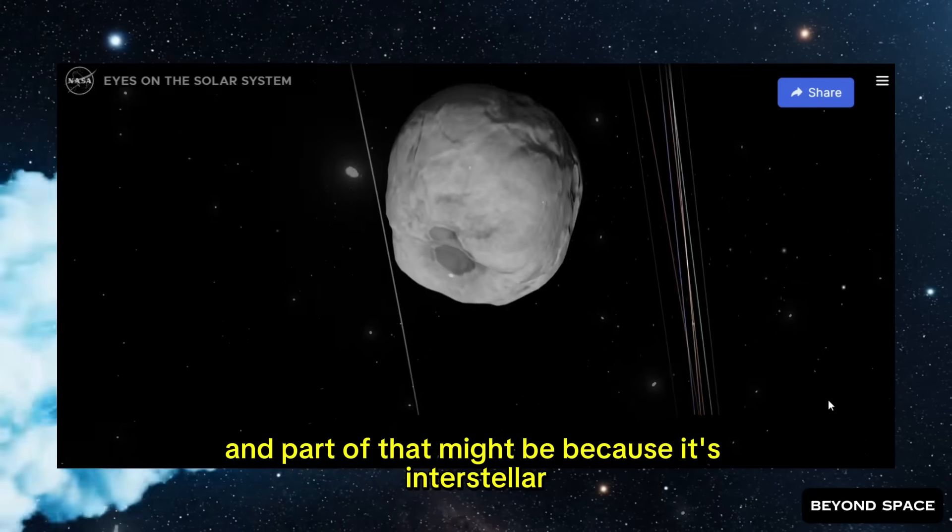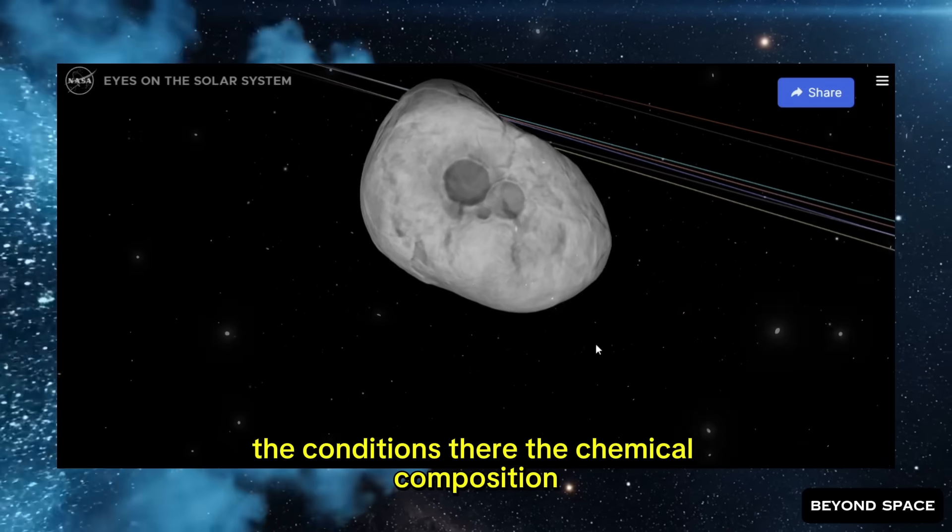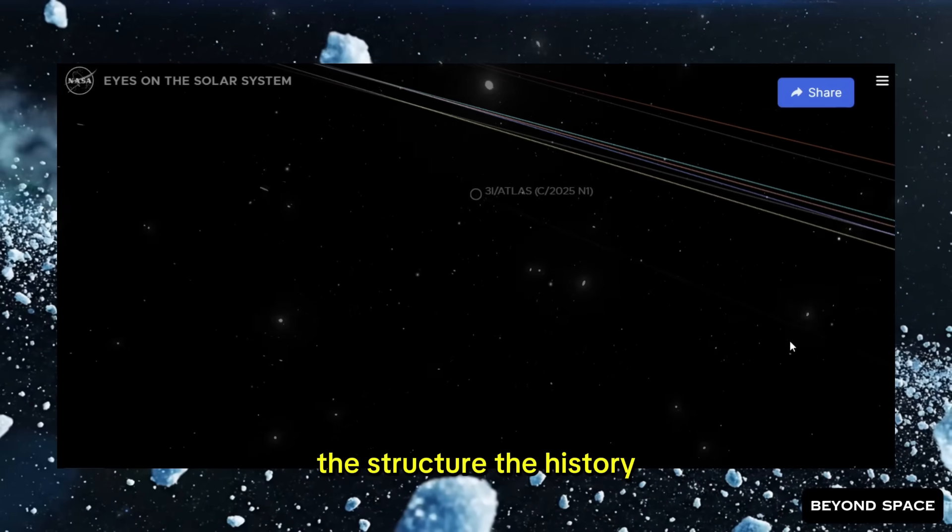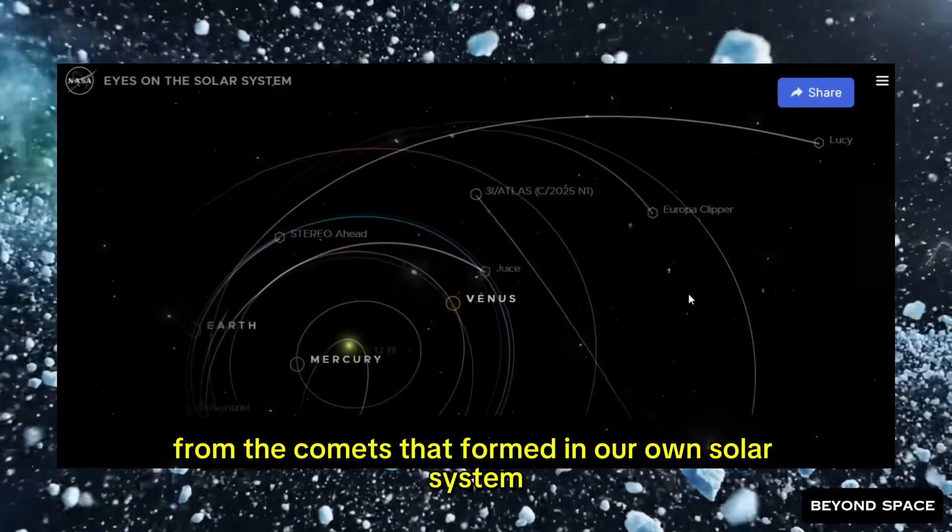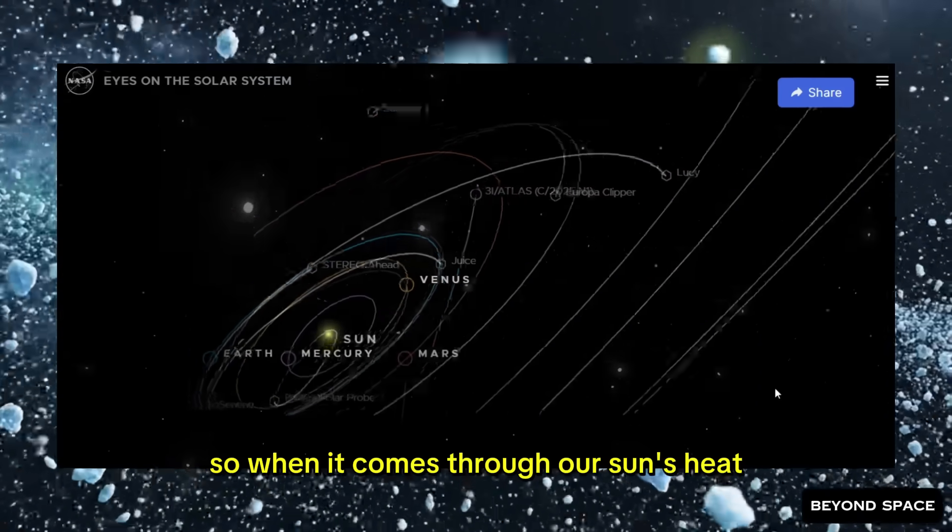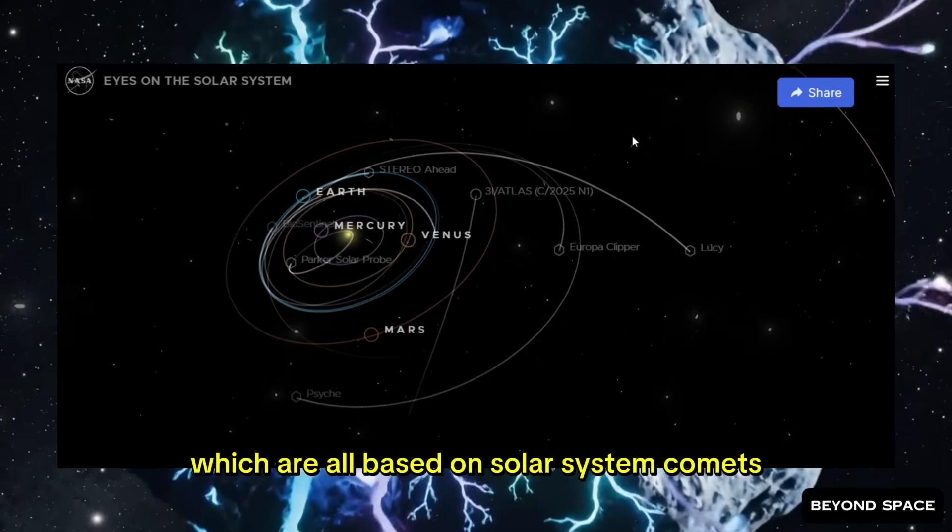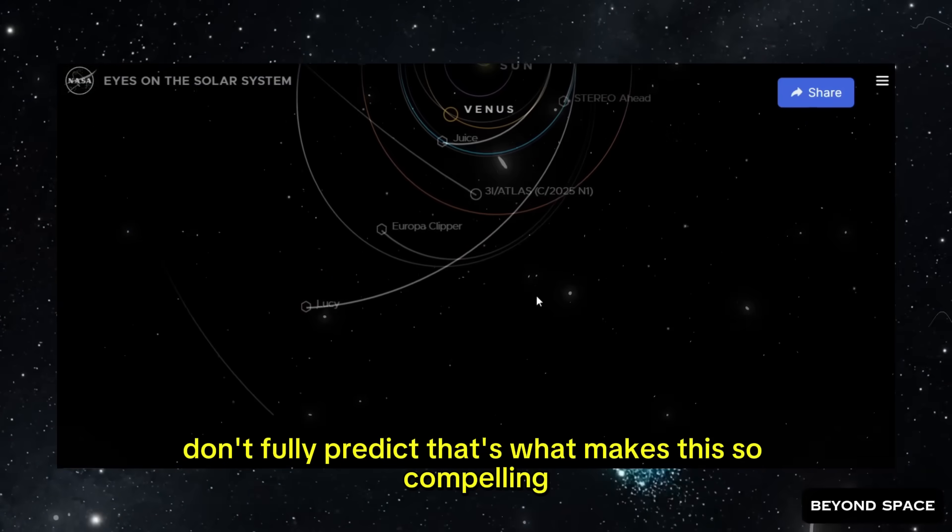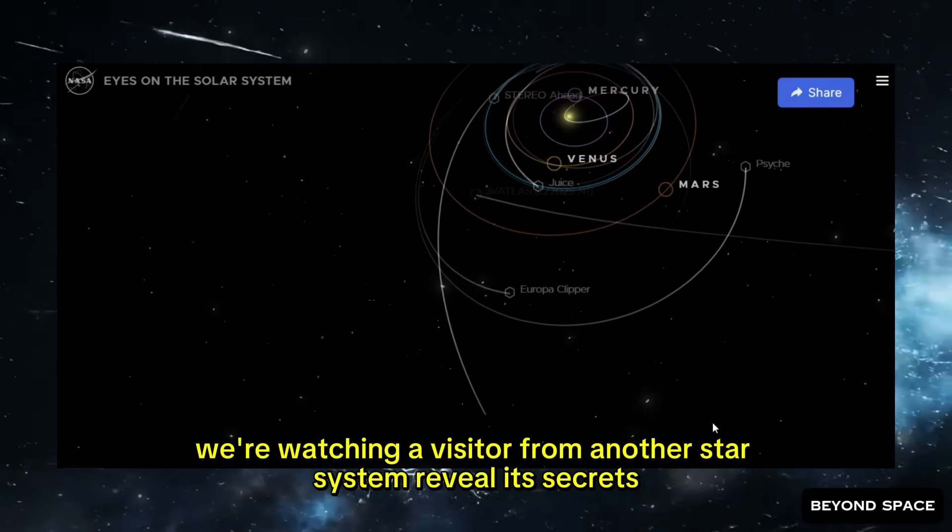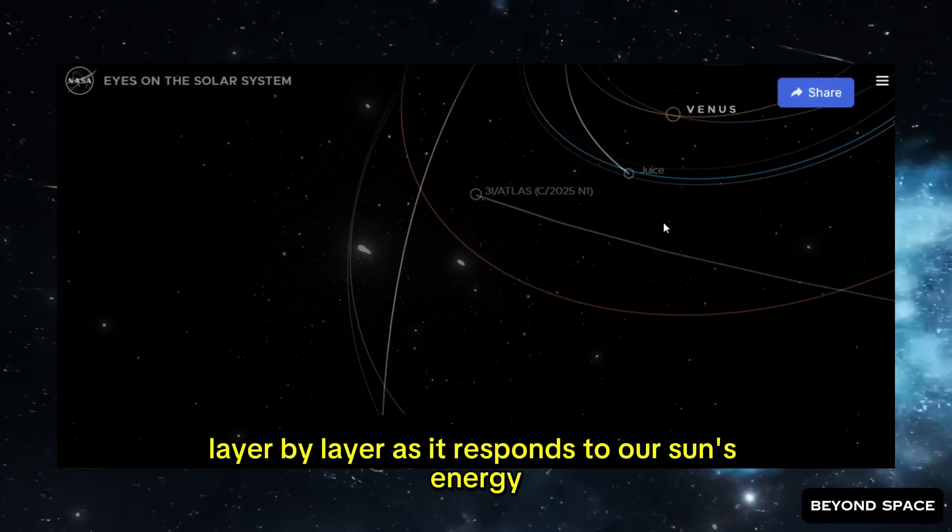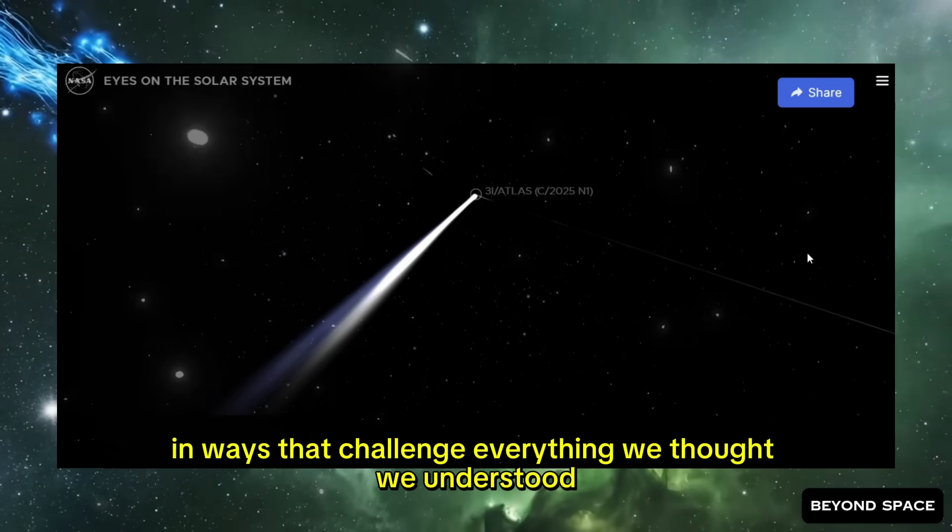And part of that might be because it's interstellar. This thing formed around a different star. The conditions there, the chemical composition, the structure, the history, all of that might be fundamentally different from the comets that formed in our own solar system. So when it comes through our sun's heat, it might be reacting in ways that our models, which are all based on solar system comets, don't fully predict. That's what makes this so compelling. We're not just watching a comet. We're watching a visitor from another star system reveal its secrets layer by layer as it responds to our sun's energy in ways that challenge everything we thought we understood.